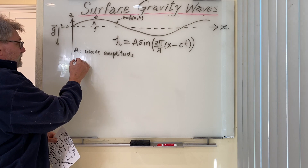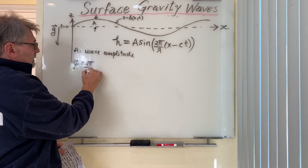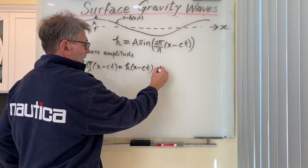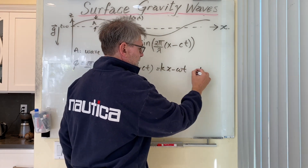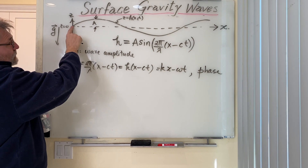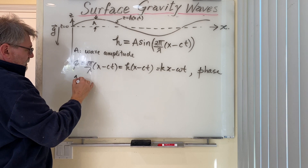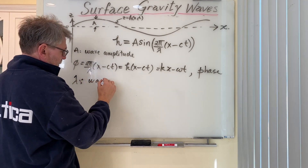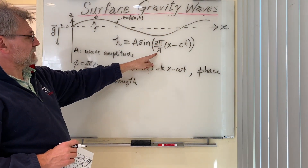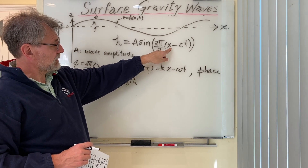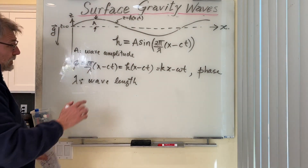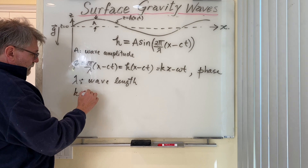Inside the sine argument we have what we call the phase φ, which is 2π/λ times (x minus ct). Sometimes we rewrite it as kx minus ct, or kx minus ωt. Lambda λ is the wavelength — the distance over one full wave — and it has units of length, since the argument of sine must be dimensionless. We can also write k equals 2π/λ.